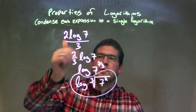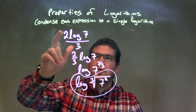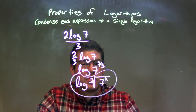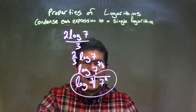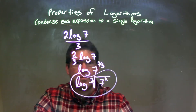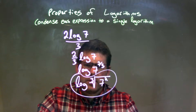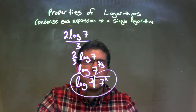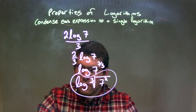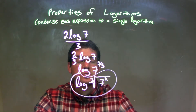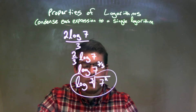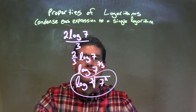Let's recap. We're given 2 log of 7 divided by 3. That 2 and 3, I rewrote to be out front as 2 thirds. That 2 thirds I wrote as the exponent of 7, bringing it up top. So we have the log of 7 to the 2 thirds power. 7 to the 2 thirds is the same thing as the third root of 7 squared. So our final answer is the log of the third root of 7 squared.